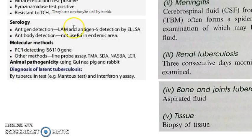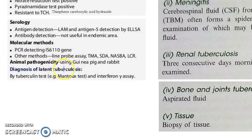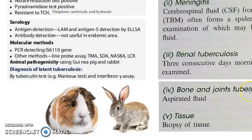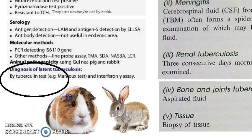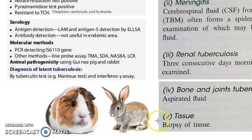Now, animal pathogenicity: here you do animal inoculation on guinea pig and rabbit. Then for latent tuberculosis, you diagnose it by the tuberculin test — that is the Mantoux test — or interferon gamma assay.